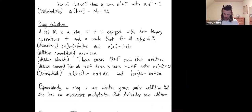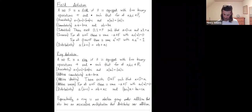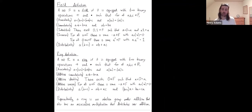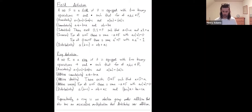By contrast, a field had more properties. A field was an abelian group under addition, and furthermore the multiplication, when restricted to the collection of non-zero elements, was also an abelian group. But that's not needed in rings — in rings we don't need multiplicative inverses.